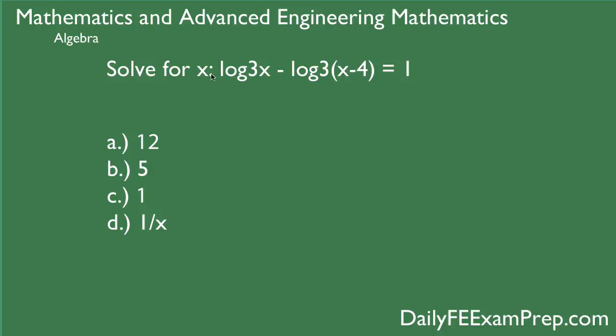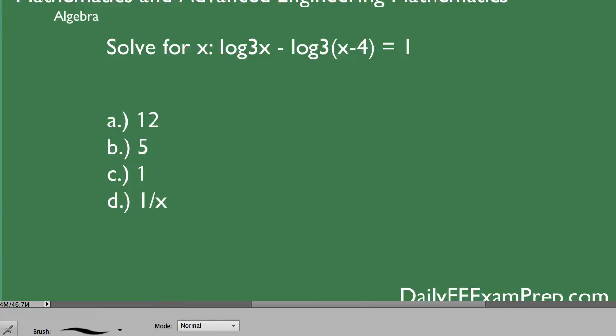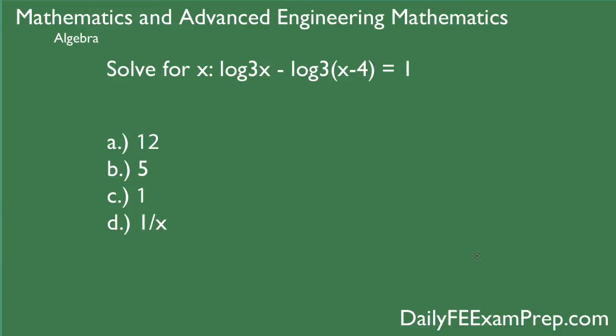If we look at our question that is exactly what we have. So we have log₃(x) minus log₃(x-4) - that 3 looks like it's 3x but that's actually a base - is equal to 1. So let's go ahead and solve for it.